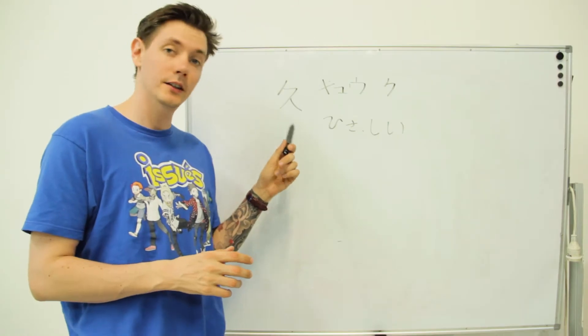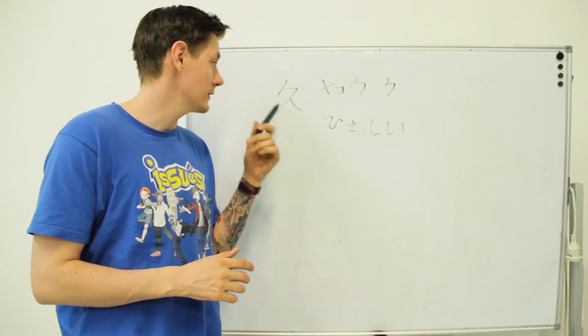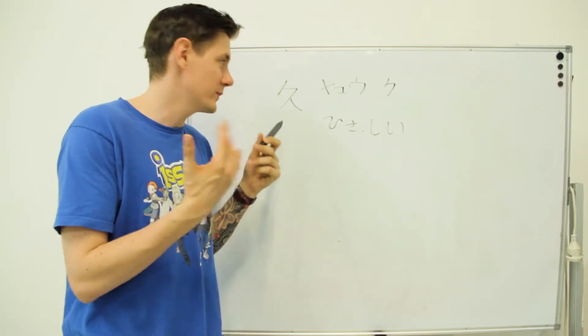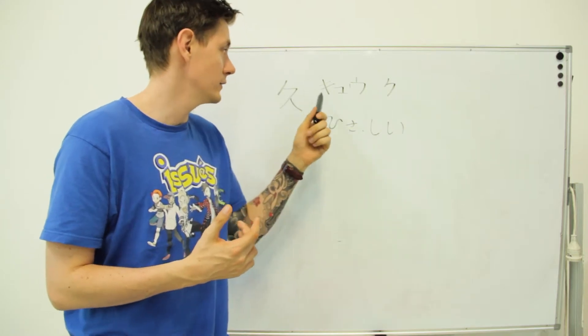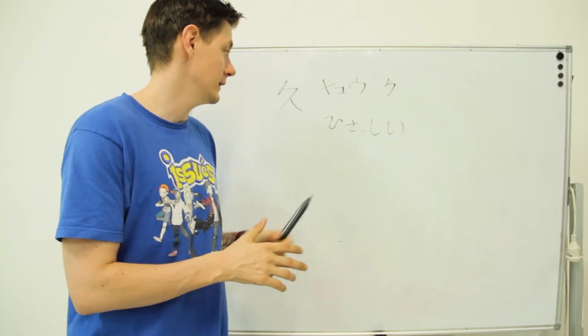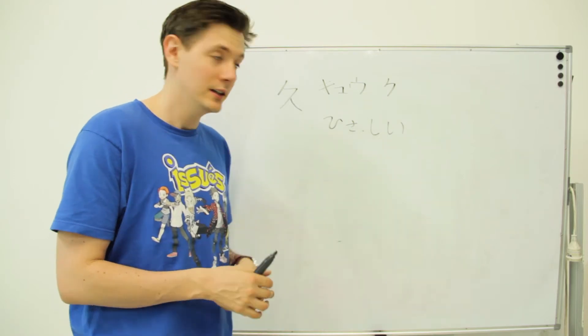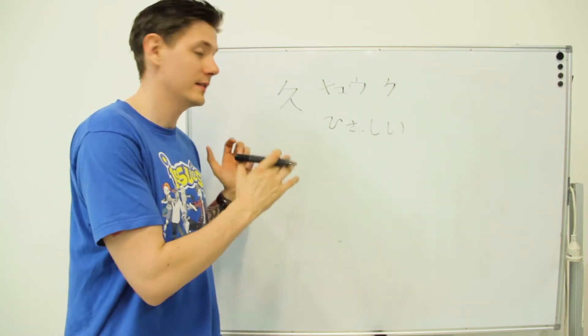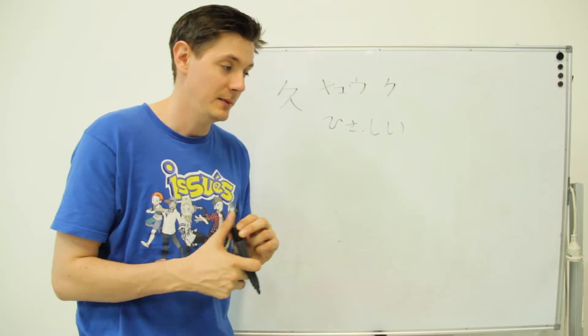On to the next one. This next kanji is quite a simple shape. It means long time or old story. The onyomi reading is kyuoku. And the kunyomi reading is hisa from hisashi. You'll probably most commonly see this kanji in the phrase hisashiburi, meaning long time no see.